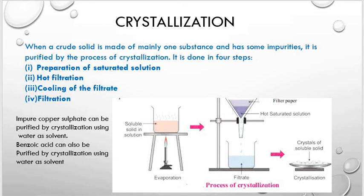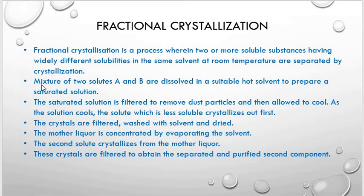Crystallization of common salt from an impure sample is a simple example. Impure sodium chloride crystals are dissolved to form a saturated solution, the hot solution is filtered, and on cooling, crystals of sodium chloride gradually form while the soluble impurities are removed. Similarly, impure copper sulfate can also be purified by crystallization using water as a solvent, and benzoic acid can also be purified by crystallization with water as the solvent.